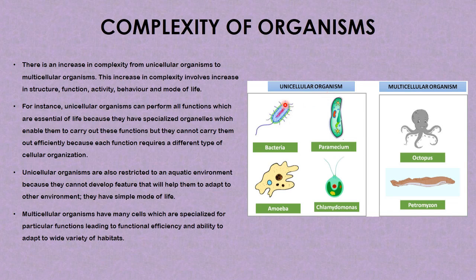Here are examples of unicellular organisms and multicellular organisms. Examples of unicellular organisms are bacteria, paramecium, amoeba, and chlamydomonas. Examples of multicellular organisms are the octopus and the petromyzon.